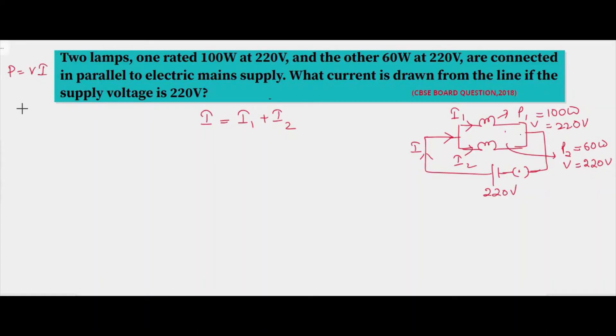Using this we'll find out the current flowing in each resistor or lamp, and then we'll add them to find out the total current.